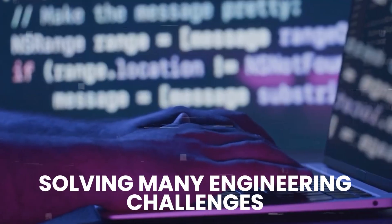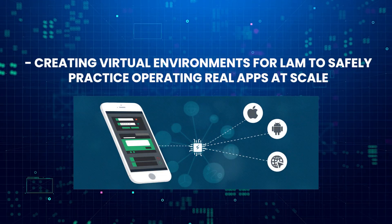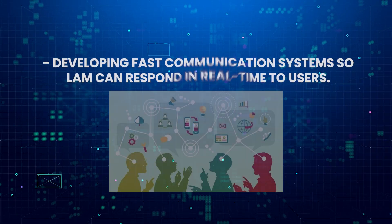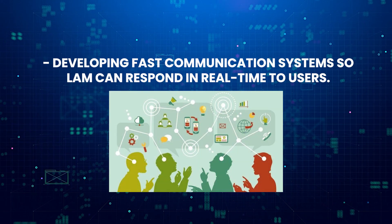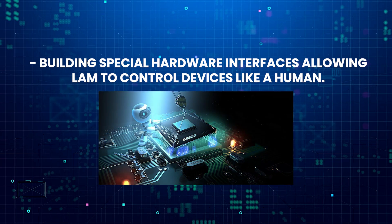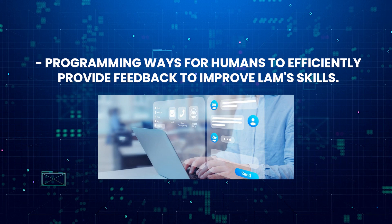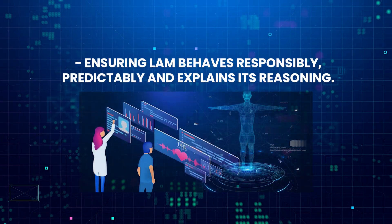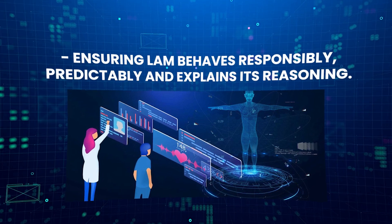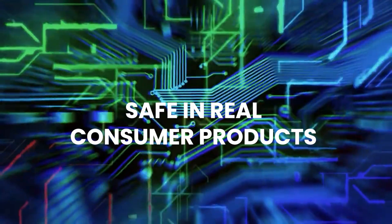Building LAM required solving many engineering challenges: creating virtual environments for LAM to safely practice operating real apps at scale; developing fast communication systems so LAM can respond in real-time to users; building special hardware interfaces allowing LAM to control devices like a human; programming ways for humans to efficiently provide feedback to improve LAM's skills; and ensuring LAM behaves responsibly, predictably, and explains its reasoning. This complex infrastructure makes LAM usable and safe in real consumer products.